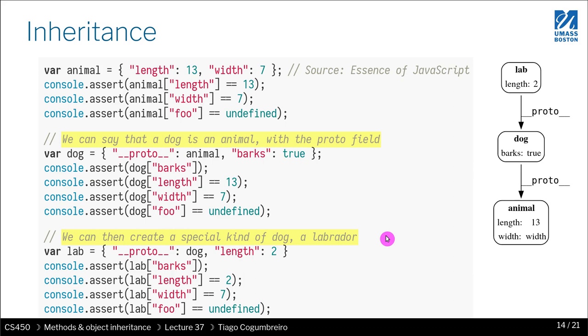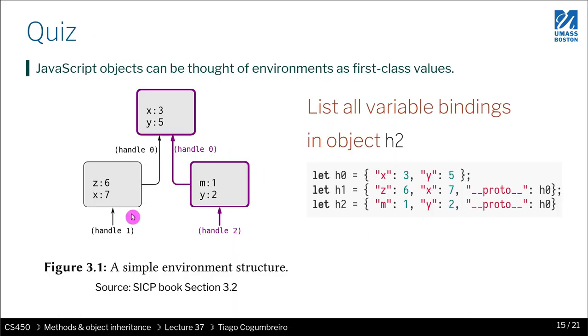So what does this remind you? Yes, it reminds you of environments, the environment structure that we learned for Racket. We can still use the same example that we saw before, figure 3.1 of the SICP book. What you will note is that I can recreate this structure, this tree structure, in JavaScript, by using the __proto__ fields, where I link what was before a frame is now an object to a parent frame, which before was a frame, but now is an object. So now the boxes mean objects, and the arrows are references __proto__.